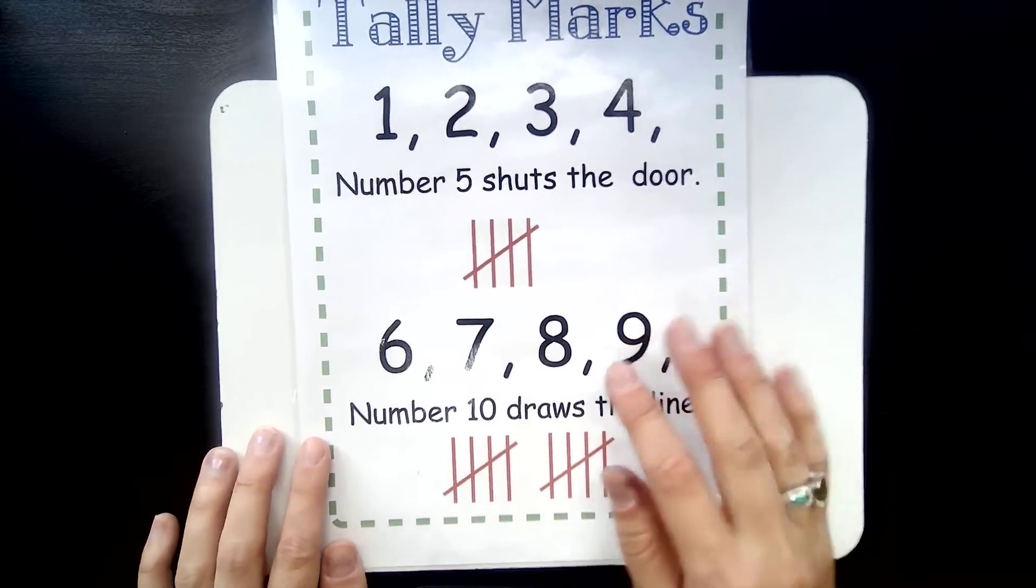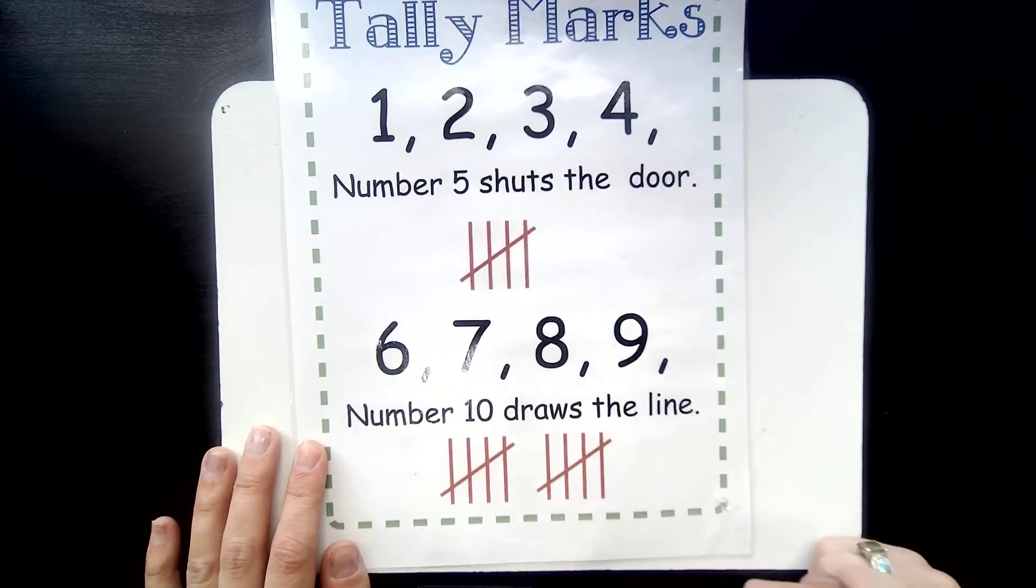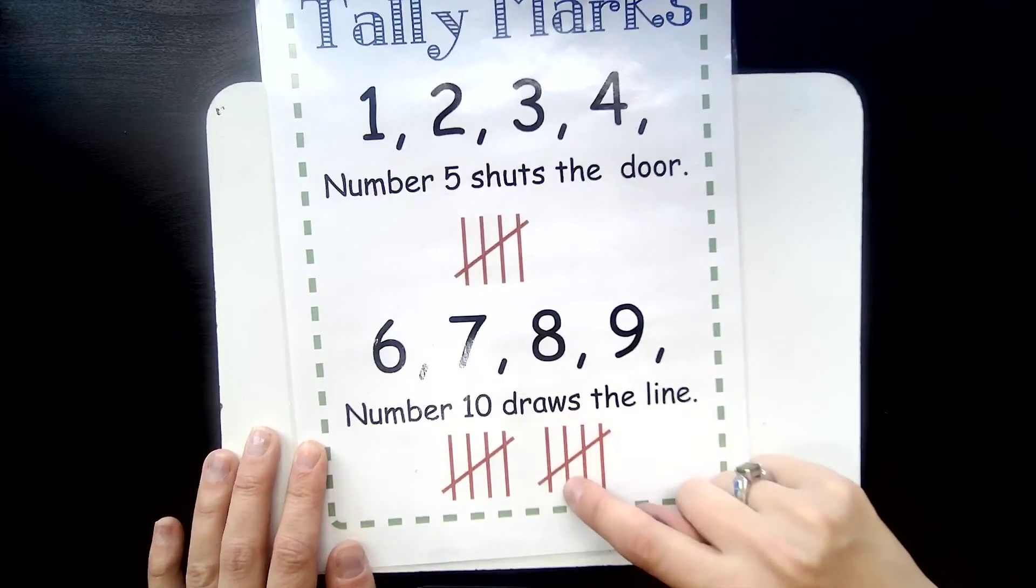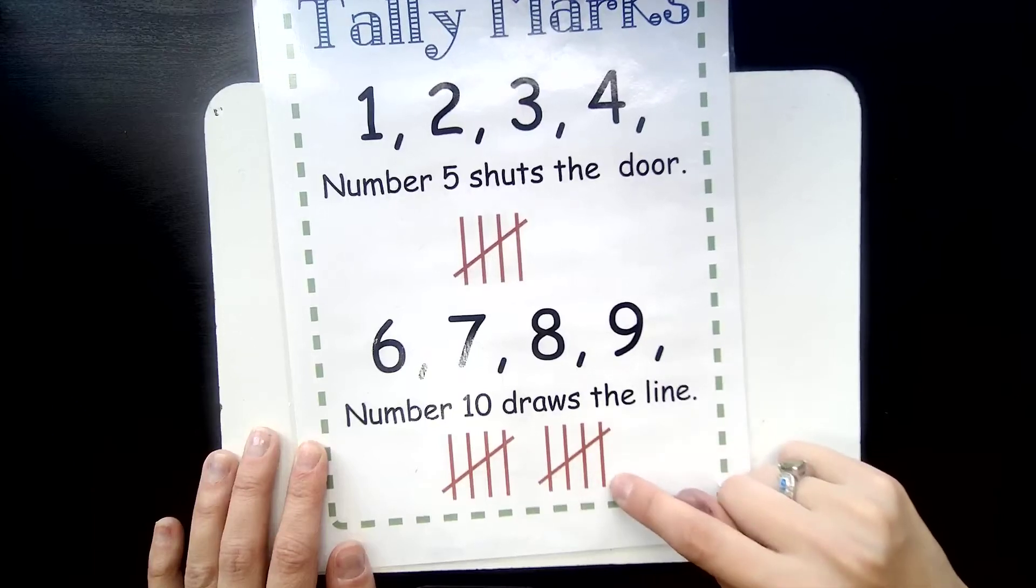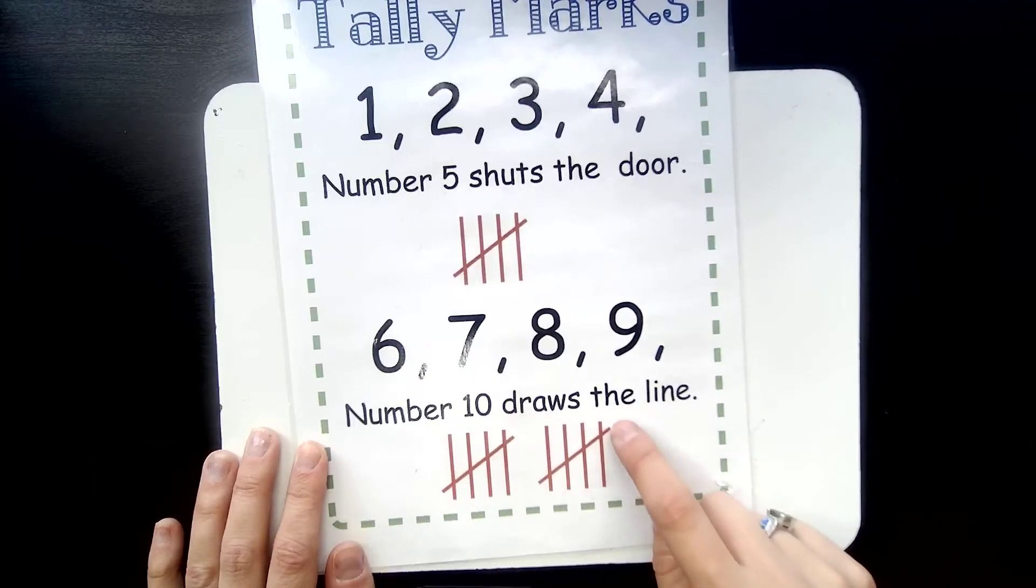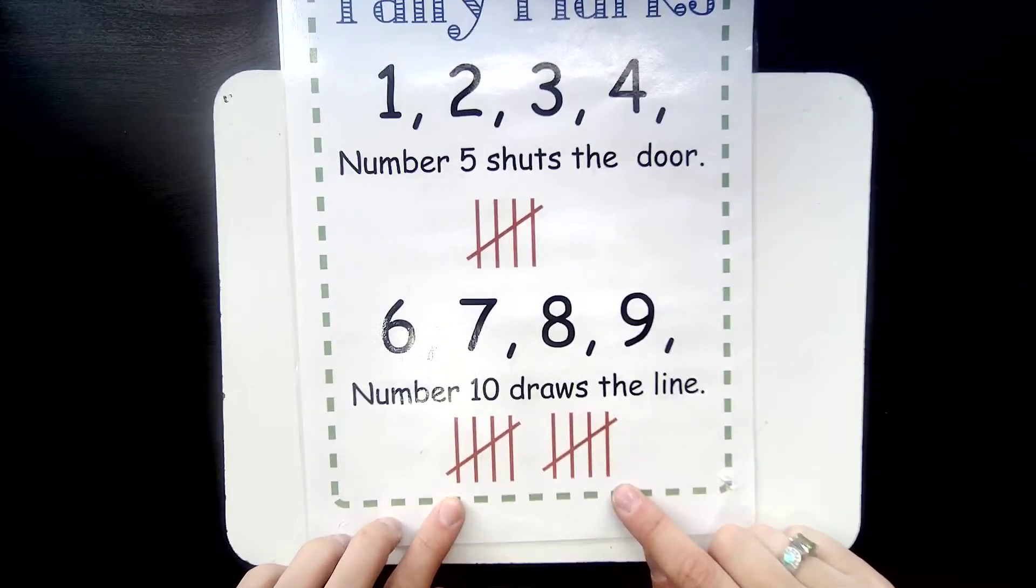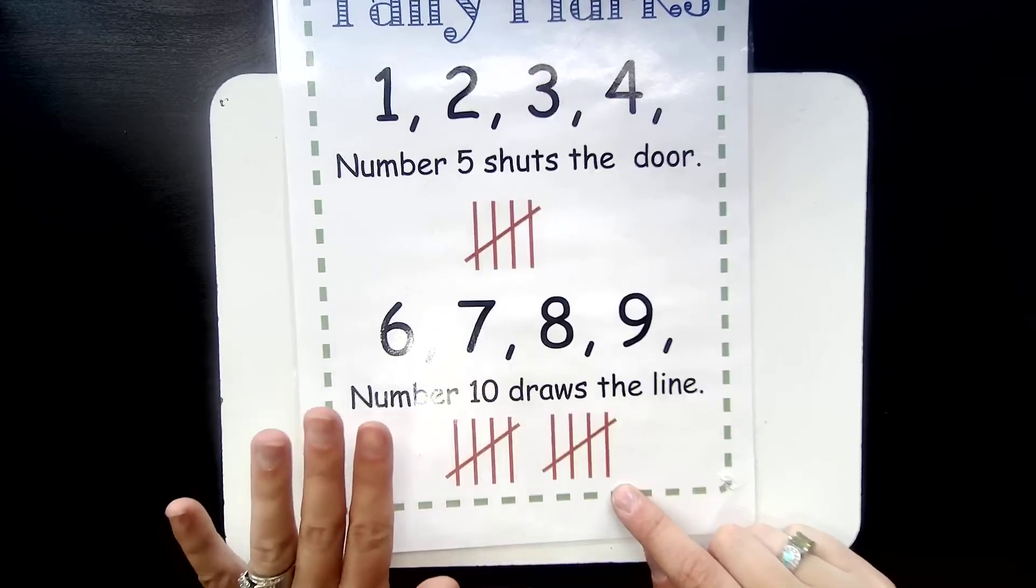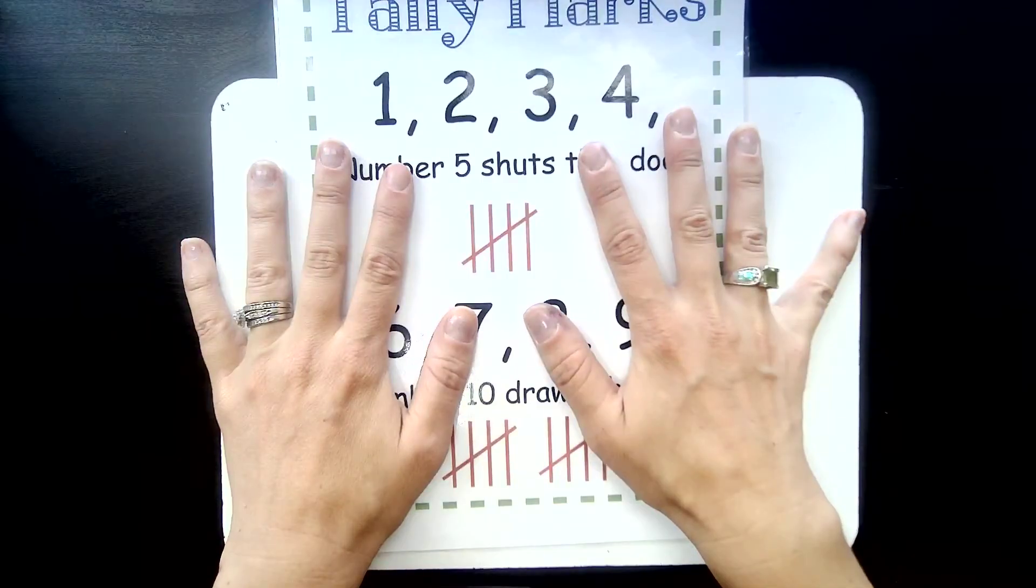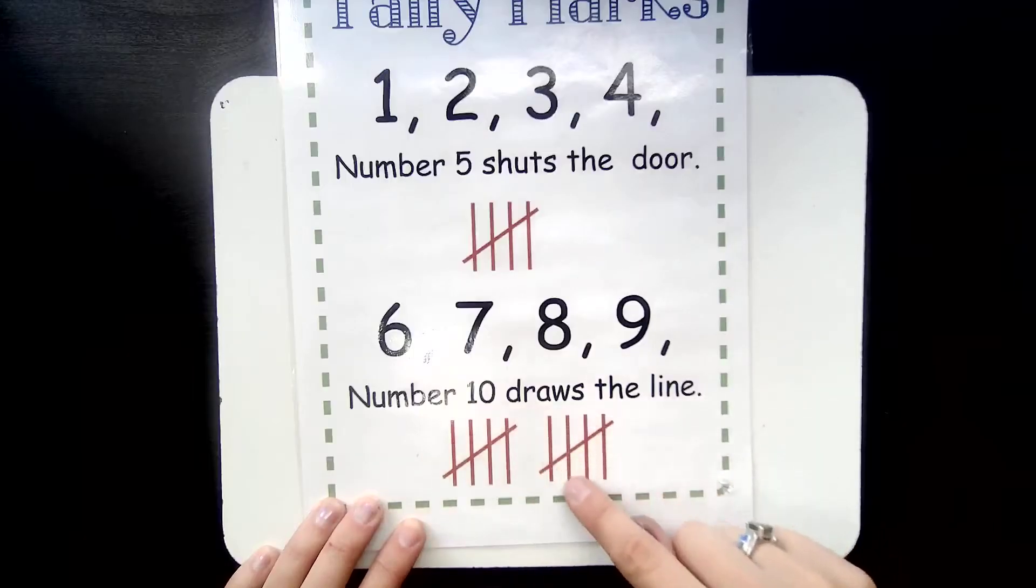Then it continues. Six, seven, eight, nine. So once again, you draw four straight lines. Six, seven, eight, nine. Number ten draws the line. So number ten also groups them together. This is what ten tallies ends up looking like. It's two groups of five, just kind of like with your hands. Five and five, that's ten. Well, in tallies, it's the same way. Groups are grouped together in groups of five.